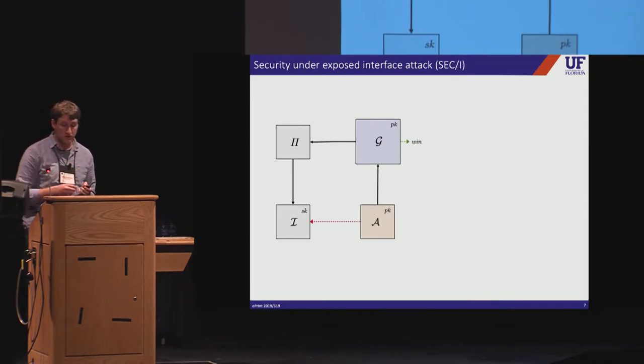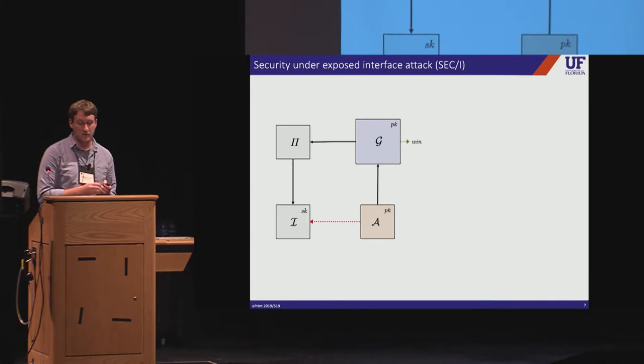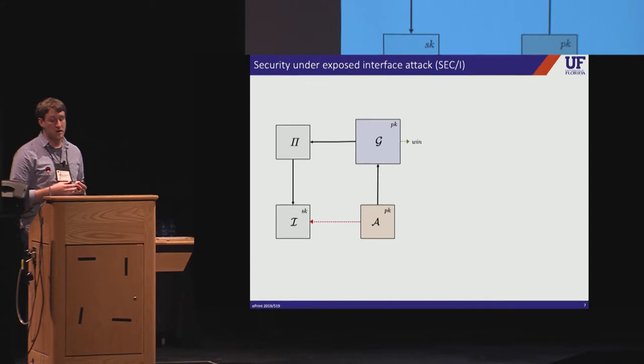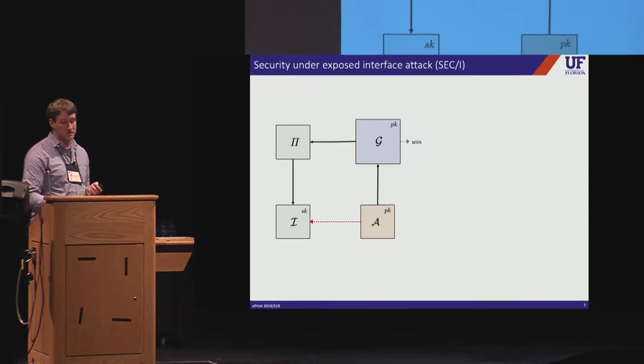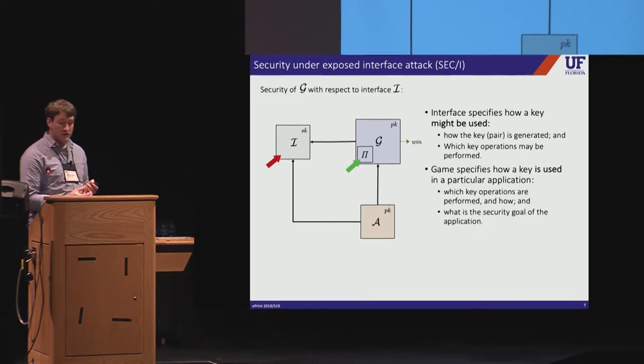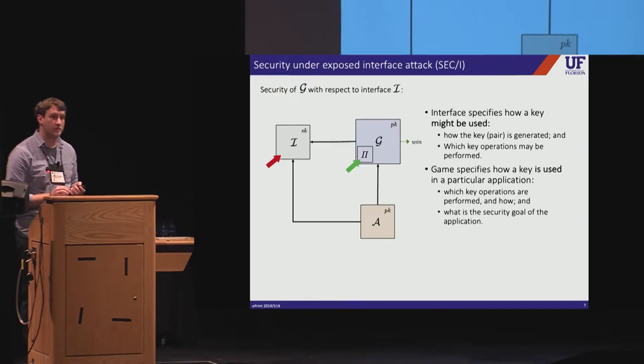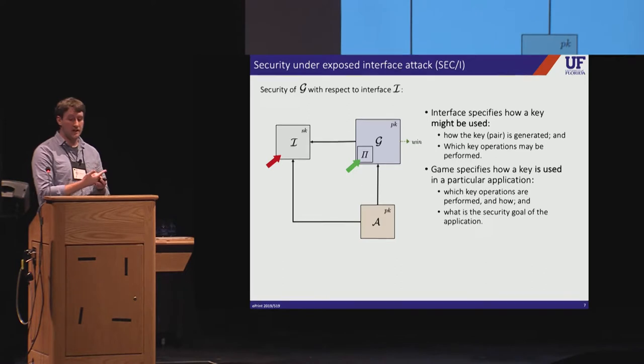But first, let me return to an earlier slide and fill out some of the details of our main security notion. So first of all, secret key operations in this experiment are specified by an interface. And we model key reuse attacks against the scheme by giving the adversary direct access to this interface. Now, notice that the only purpose that the scheme serves in this experiment is to define how the game interacts with the interface. So for our purposes, it'll be simpler to drop the scheme from the formal definition and allow it to be defined by the game itself. So the new experiment now just involves three objects, the adversary, an interface, and a game.